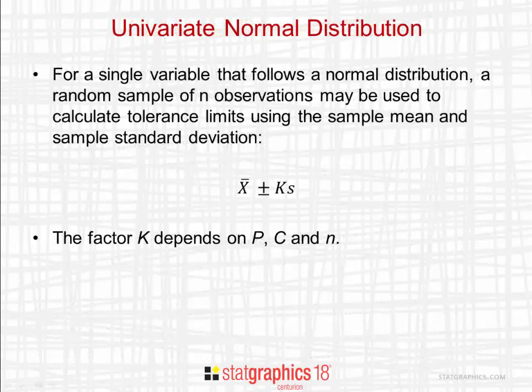For a single variable that follows a normal distribution, we can use the mean and standard deviation of a random sample of n observations to create the tolerance interval. The equation for the statistical tolerance interval is x-bar, the sample mean, plus and minus k times s, the sample standard deviation. The factor k depends on P, C, and n.